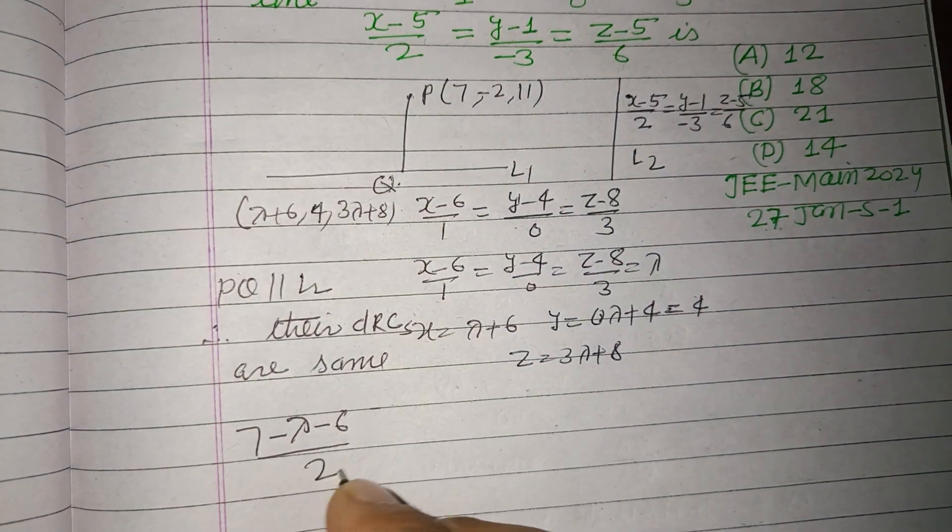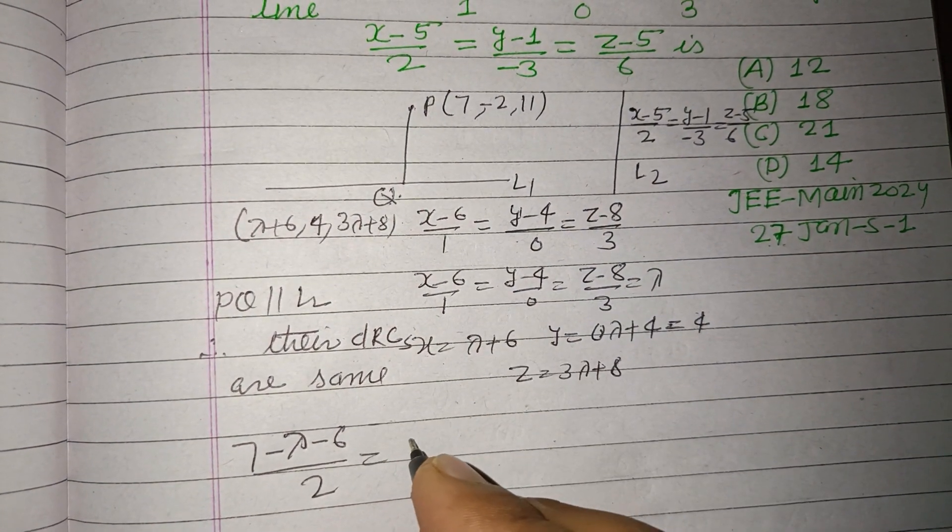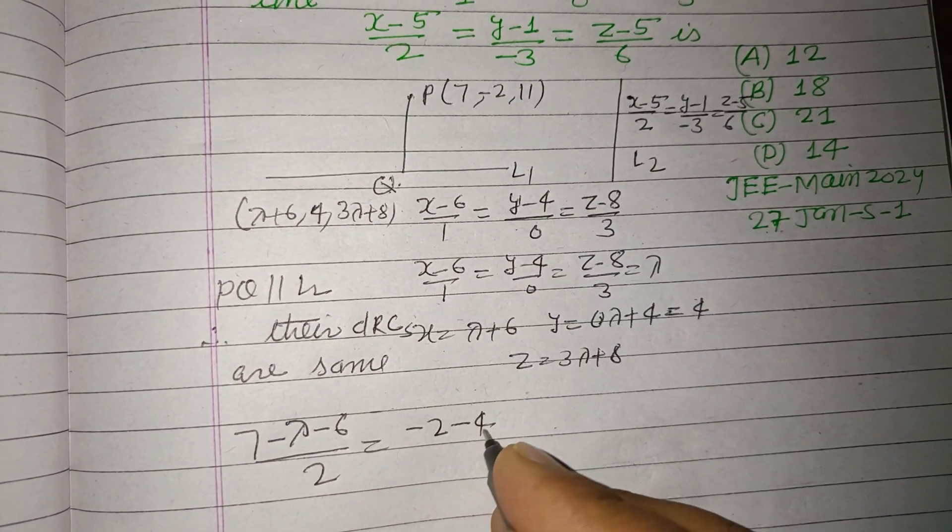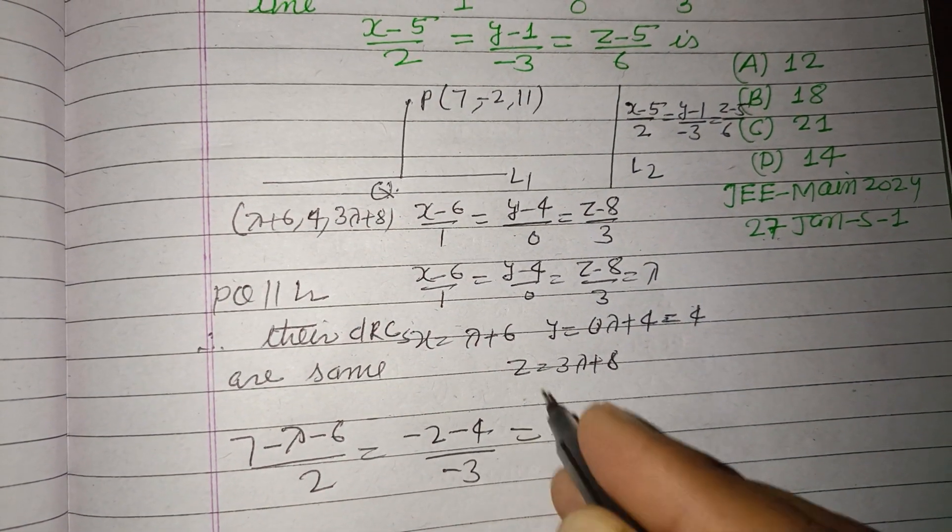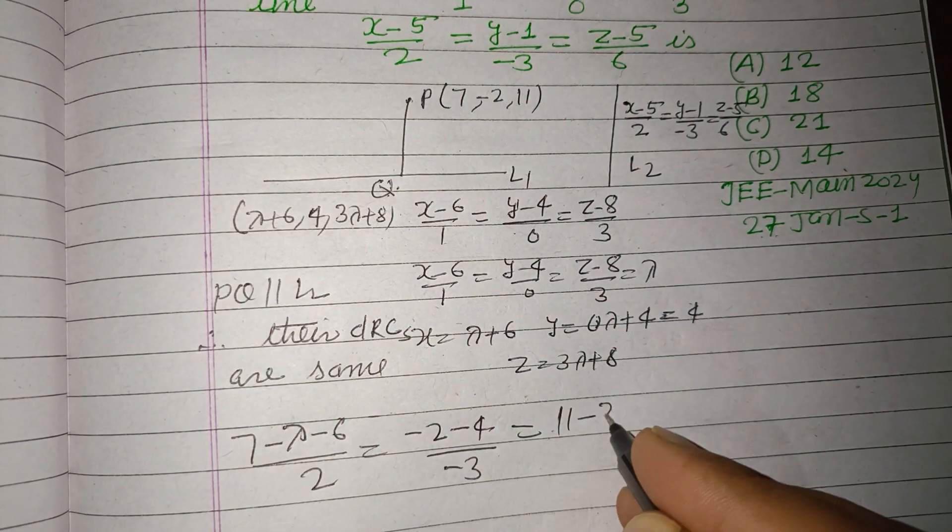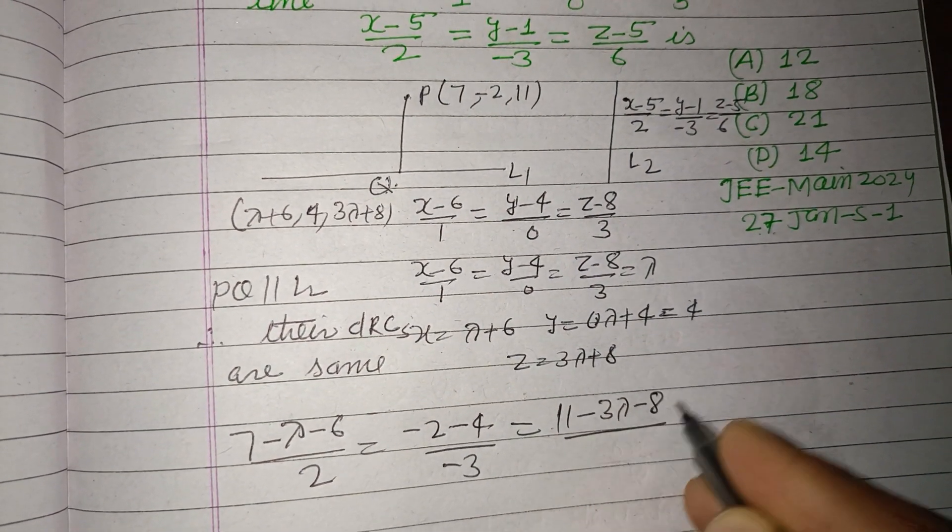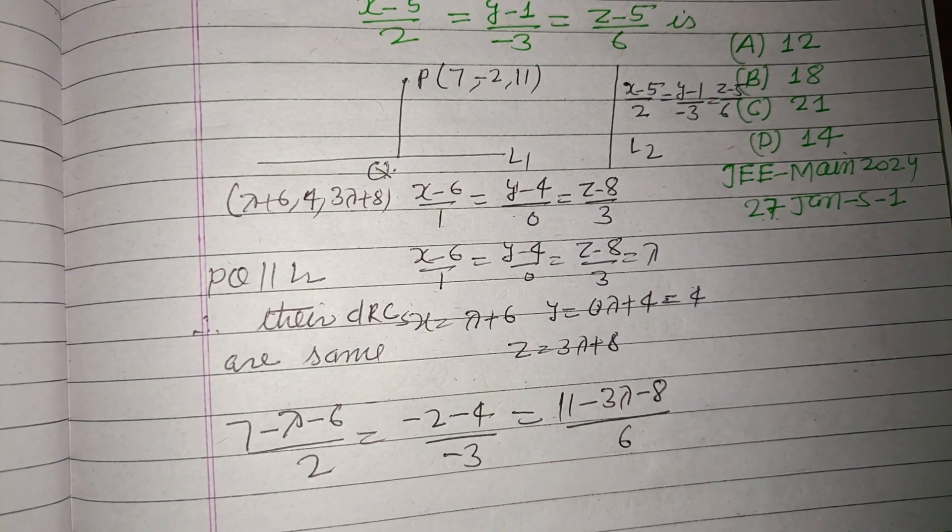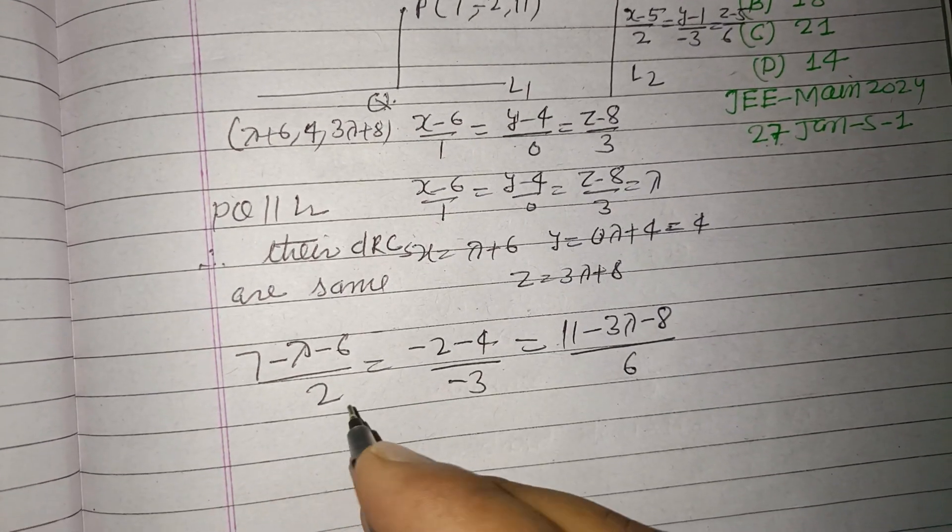this is (11-(3λ+8))/6. From here we get the value of λ. So this is (1-λ)/2 = -6/(-3) = 2.